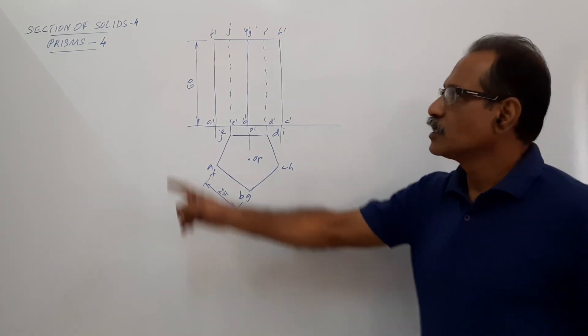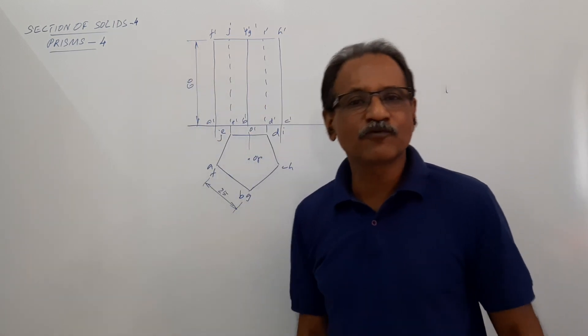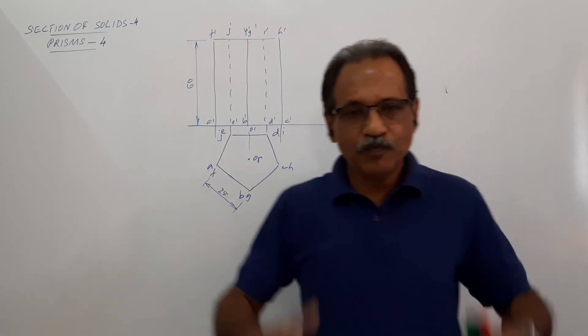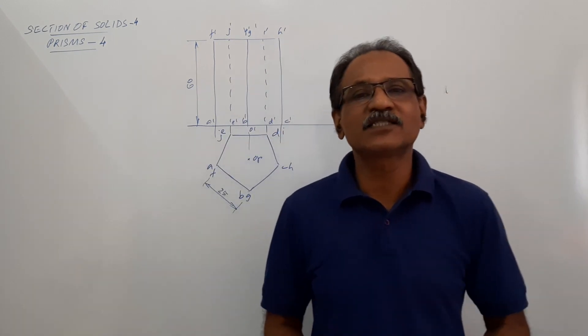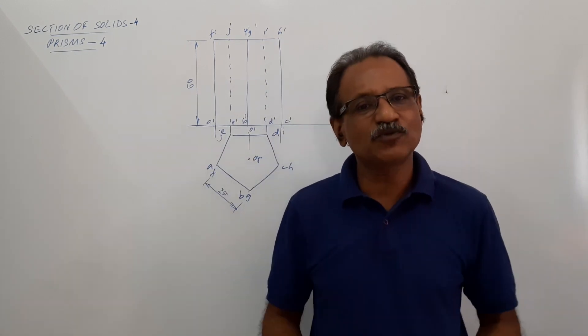Hi students, sectional solids 4, prisms 4. Pentagonal prism, 25mm on side, 60mm axis, standing on XP on its face.